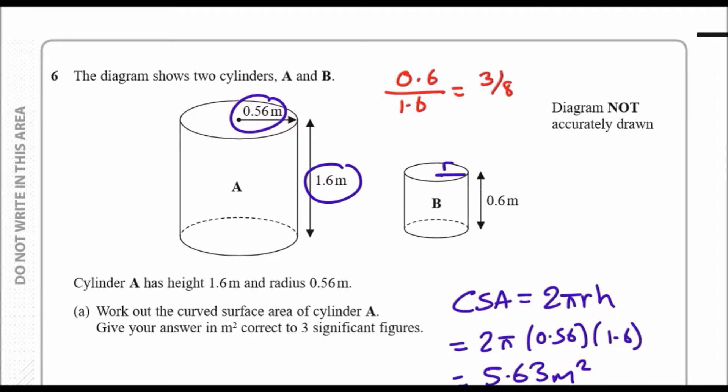This is essentially 0.375 times smaller, so 37.5% smaller. That means r must be 0.375 of 0.56. So r equals 0.375 times 0.56, and that should give us a radius of 0.21.